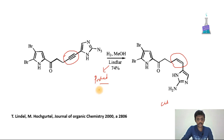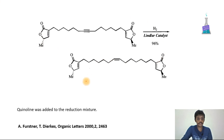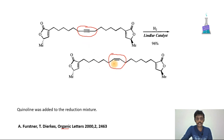The Lindlar catalyst is usually poisoned by sulfates or carbonates, so alkynes are only converted into alkenes — the alkenes will not be further converted into alkanes. Here is another example taken from Organic Letters. The compound is complex, but it is a very simple reaction. Only the alkyne portion is converted into the cis alkene, with quinoline added.